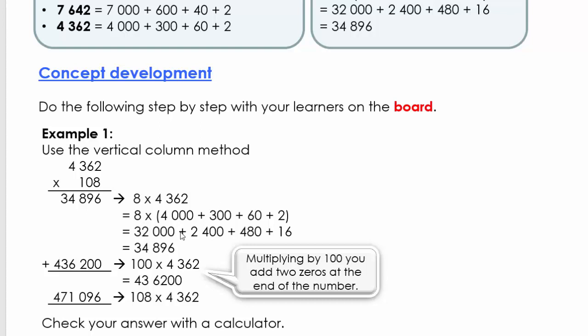I'm going to calculate it and it gives me 32,000, 8 times 300... and if I add this up, this is what I'm going to get and I can write it down here.